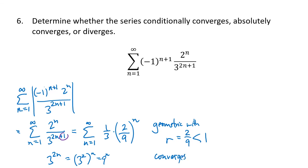And now we're done, because when we take the absolute value of our series and get something that converges, our series is absolutely convergent. We don't need to examine the original series further — if the absolute value series converges, the original series must also converge. Our conclusion is that this series is absolutely convergent.